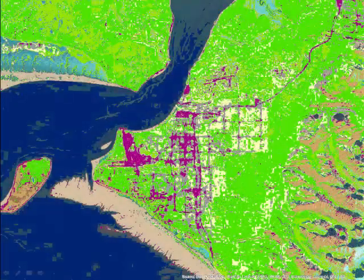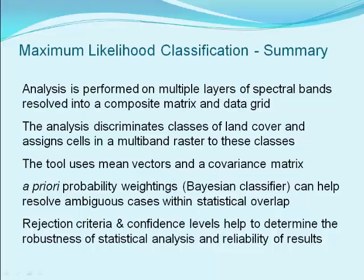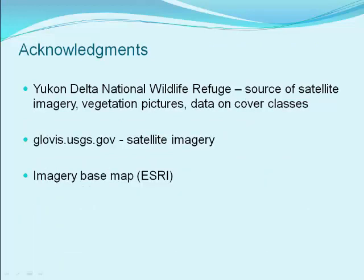In summary, analysis is performed on multiple spectral bands to discriminate classes of land cover based on spectral signatures. A Bayesian classifier helps resolve ambiguous cases. Measures of statistical confidence help evaluate the quality of the analysis. Thanks to the Yukon Delta National Wildlife Refuge, the US Geological Survey, and ESRI.